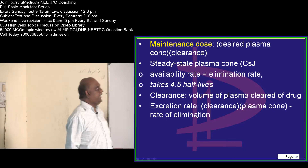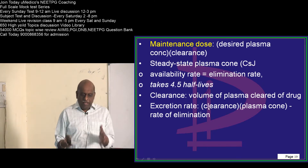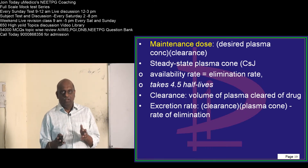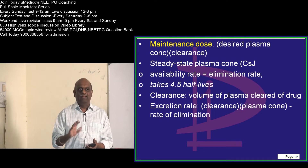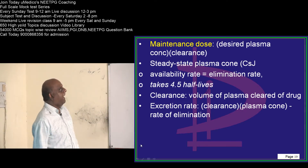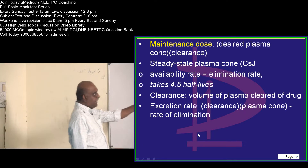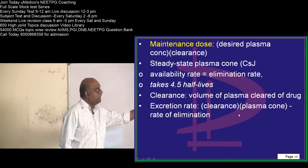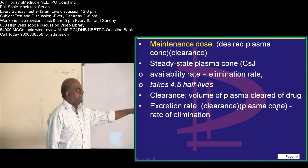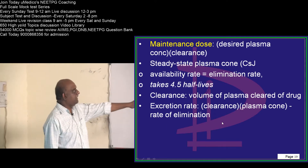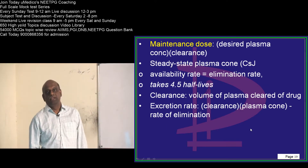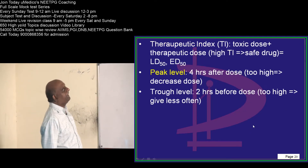What is meant by clearance? The volume of plasma that is cleared of the drug is called clearance. Clearance multiplied by plasma concentration minus the rate of elimination gives you the excretion rate — that is what you have to ultimately remember.